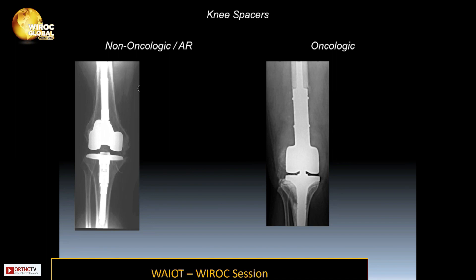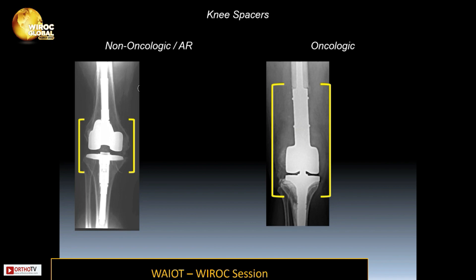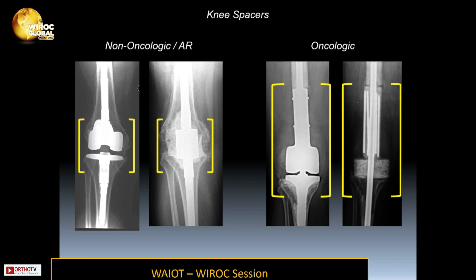In non-oncologic or adult reconstructive cases, there is a much smaller bone gap, whereas in oncologic cases the gap is much larger. In non-oncologic cases, weight-bearing endoprosthetic arthrodesis constructs are possible, whereas in oncologic cases a more creative reconstruction is required.